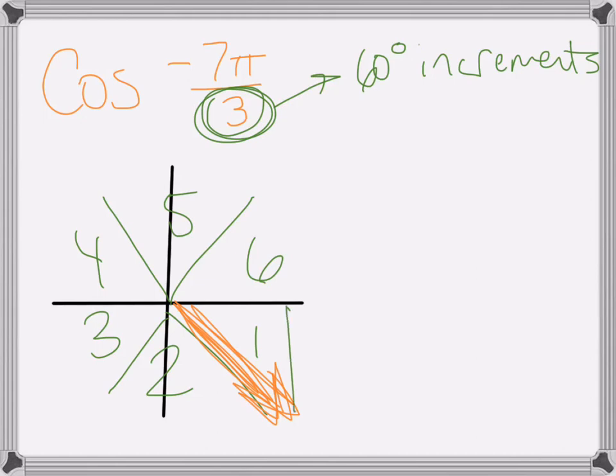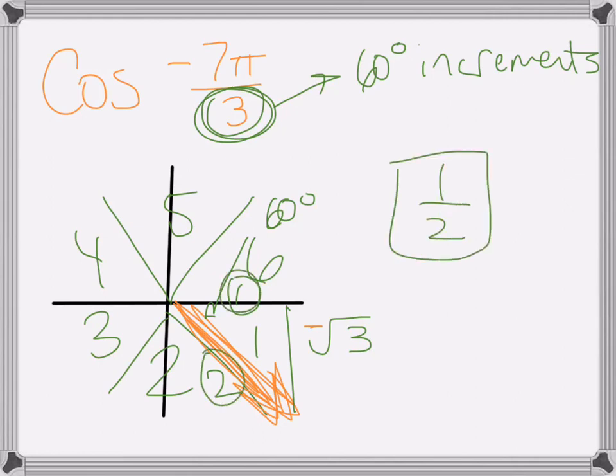So again, if it's 60 degree increments, that means my angle close to the origin is 60 degrees, meaning radical 3 is over here, 1 is right there, and then 2 would be the hypotenuse. But be careful, because notice how the x value, or the leg that's on the x-axis is positive. It's positive x. But the y value, or the other leg, is going down, so it's negative radical 3. And if I'm doing cosine, it's the x value. So the negative really didn't matter in this case. So it'd be 1 over 2, 1 half.